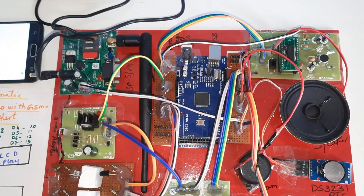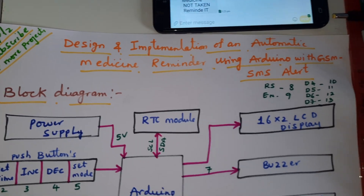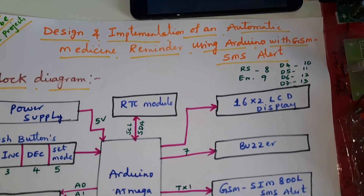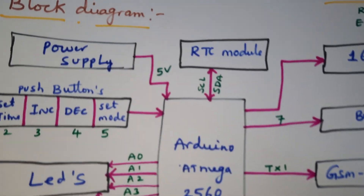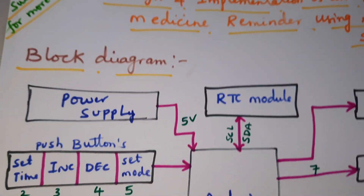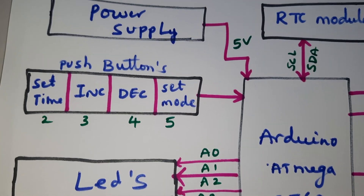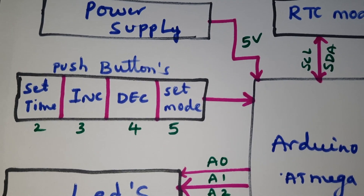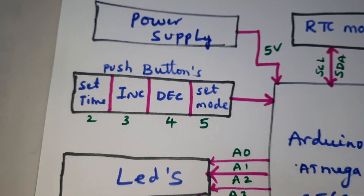Hi, we are from SVSM Badent. The project title is 'Design and Implementation of an Automatic Medicine Reminder System using Arduino with GSM SMS Alert.' In this project we are using a power supply board, a 0-to-9 volt adapter power source converting to 5 volts, an Arduino Mega 2560 board, and four push buttons: set time, interval, increment, decrement — connected to GPIO pin numbers 2, 3, 4, 5.